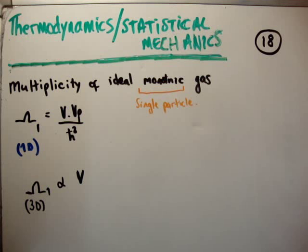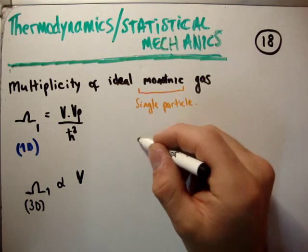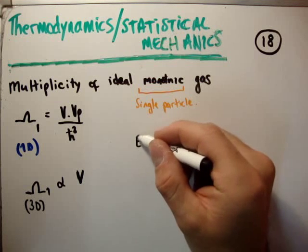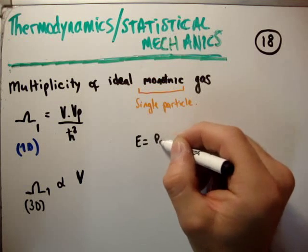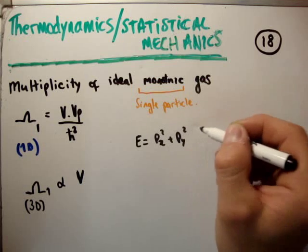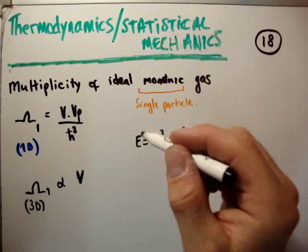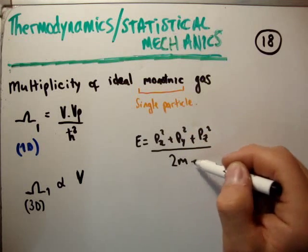Next we need to talk about momentum. We know that E = p²/2m. So that means the energy of your particle is equal to p_x² + p_y² + p_z² over 2m, because we're talking about a single particle.